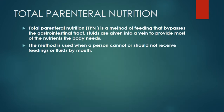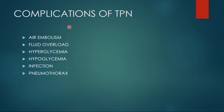Total parenteral nutrition is a method of feeding that bypasses the gastrointestinal tract. Fluids are given into the vein to provide most of the nutrients the body needs. The method is used when a person cannot or should not receive feedings or fluid by mouth. Next, we will discuss the complications of total parenteral nutrition.